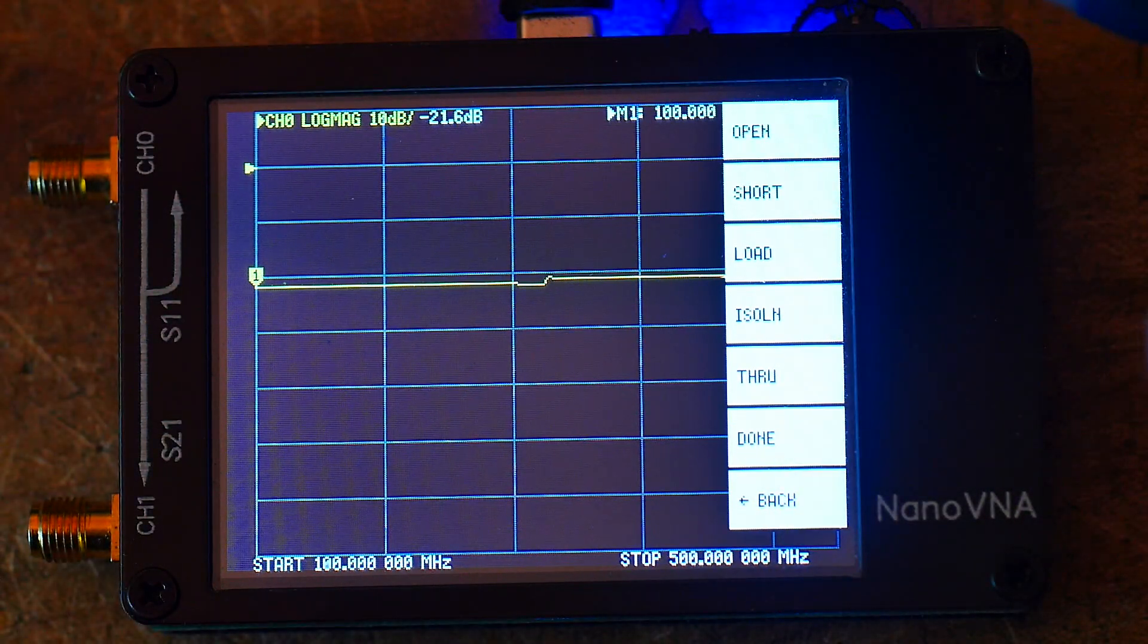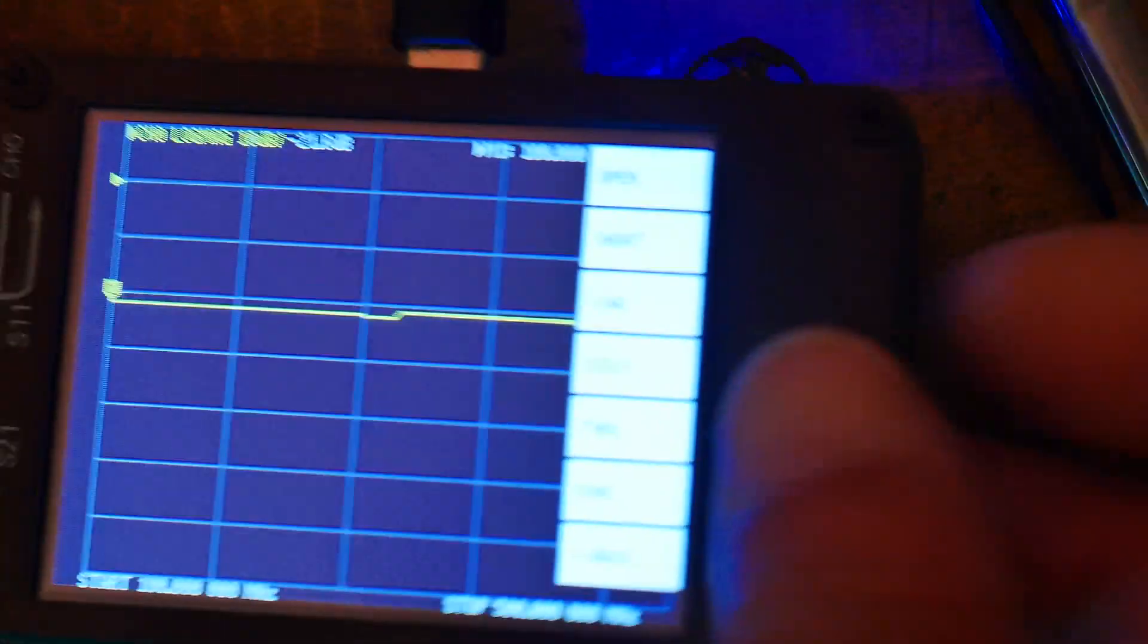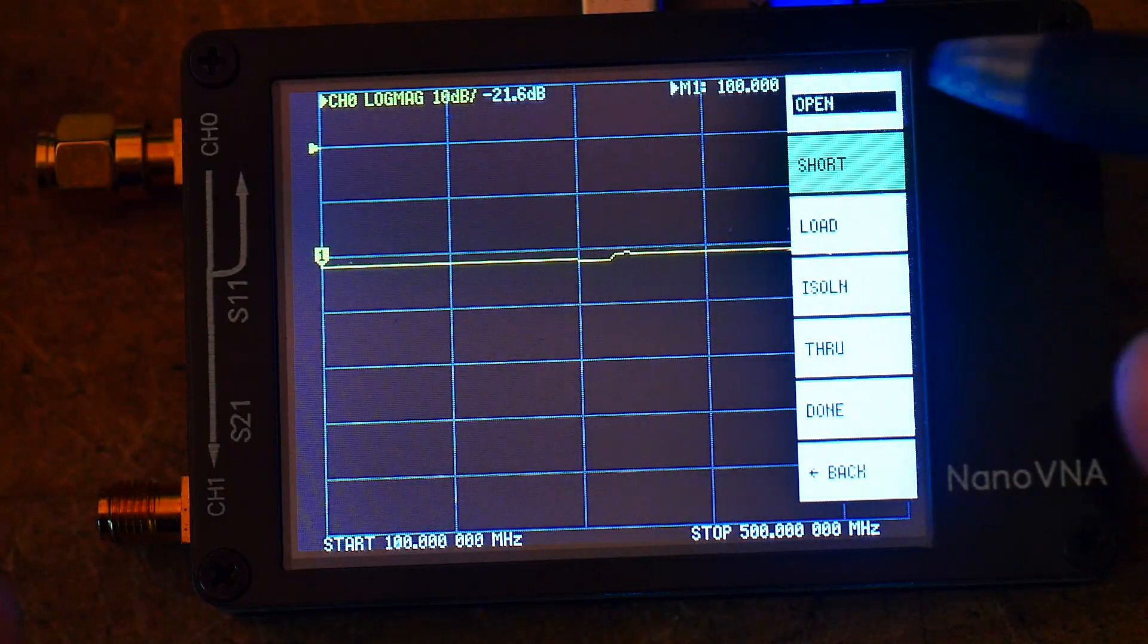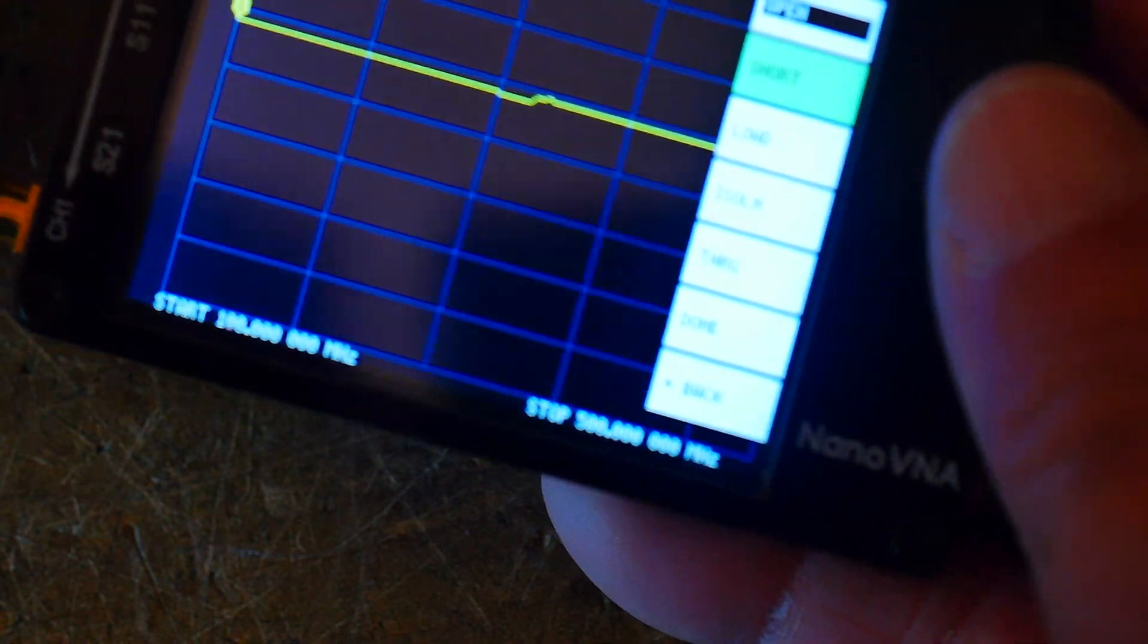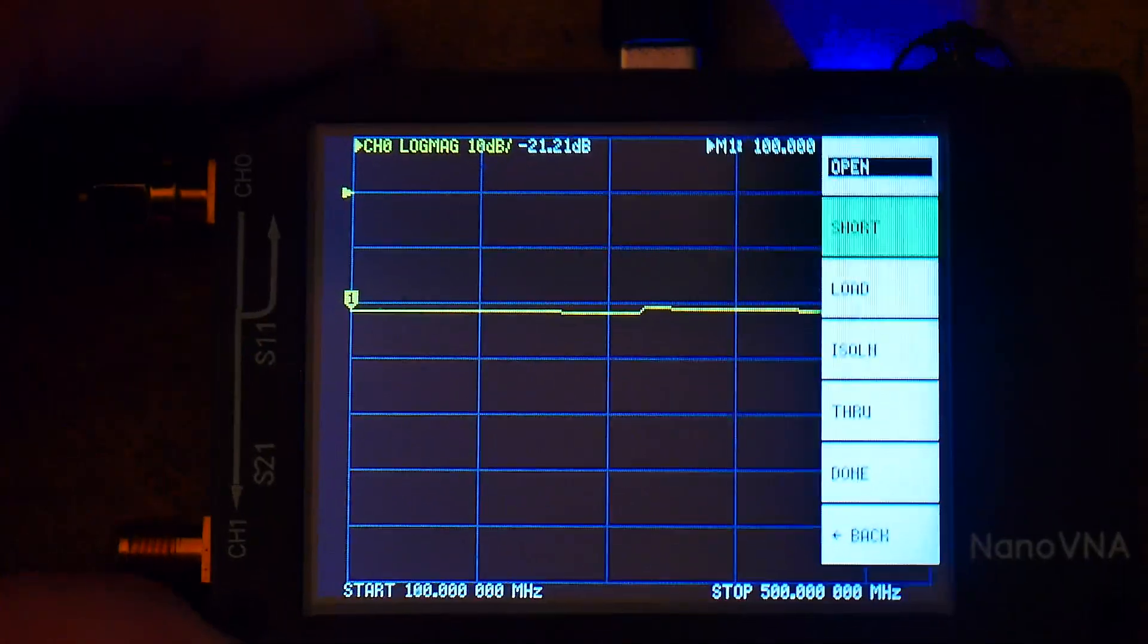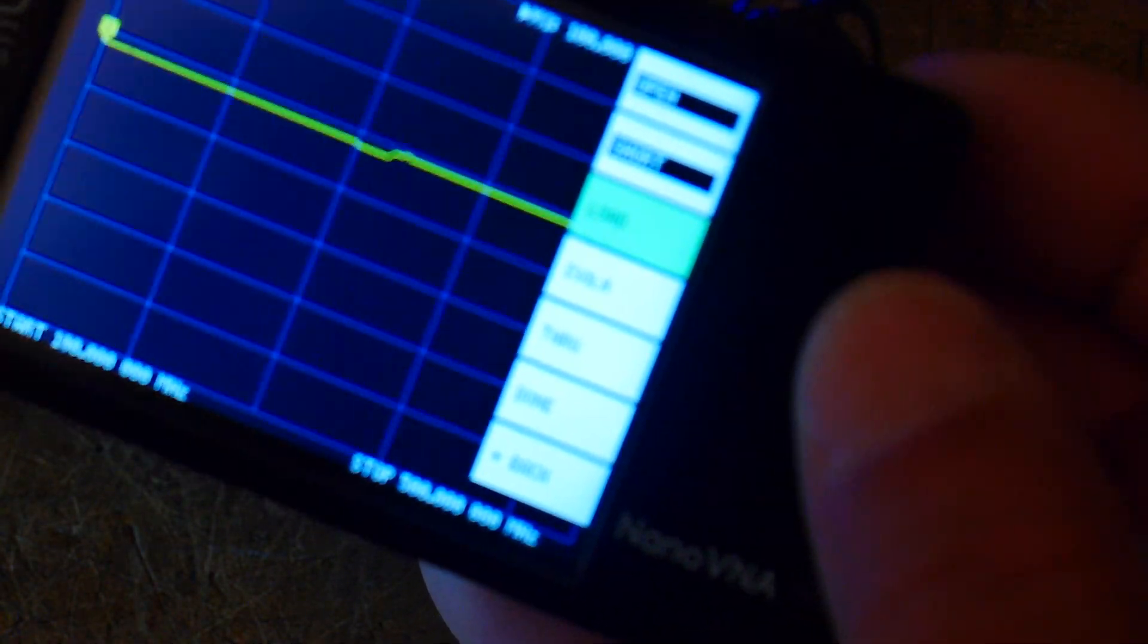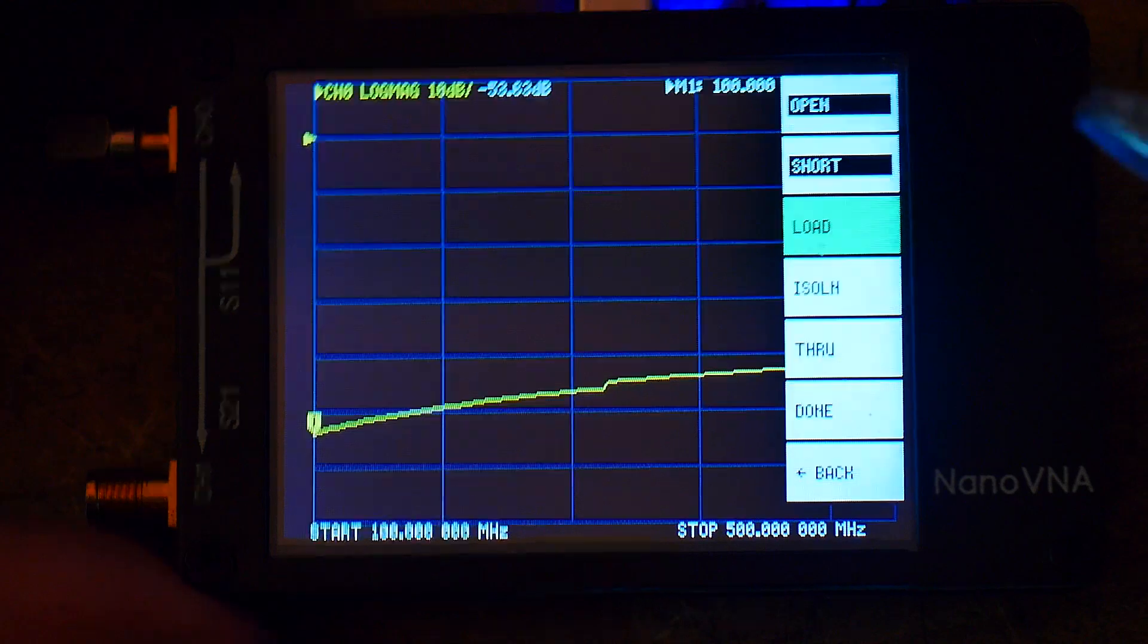So it says open. We're going to calibrate and open, which means we need to get our open. Remember, that's the one with the little O shape, the open one. So we're going to screw that on to channel zero. And when it's on, we're going to click on open. And that's it done. It's highlighted. It's done. Calibration is really fast. Next one is short. That's the shiny one. Put that one on. And we'll click on short. Done. Now we'll put in the load. And we'll click on load.